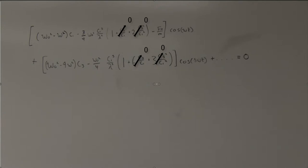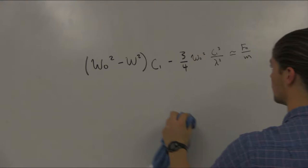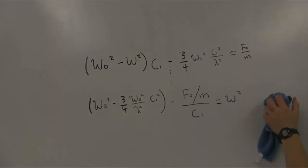Utilizing the simplification and noting that the coefficients of each term must be equal to zero, we can rewrite the zero coefficient of the cosine of omega t term as follows. This expression can be rewritten for omega squared in terms of C1.